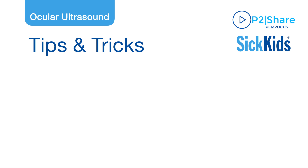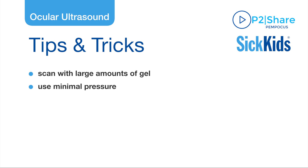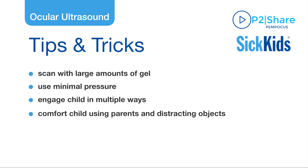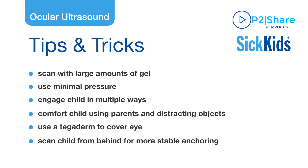Here are some tips and tricks to help you optimize your pediatric ocular scan. To minimize discomfort and injury, scan with a large amount of gel and use minimal pressure upon the globe. Engage the child with multiple methods to decrease anxiety, including showing them the machine and gel prior to touching them with the probe. Use methods of comfort such as parental involvement and distracting objects like TV or toys. Consider using a tegaderm to cover the eye. For positioning, consider scanning the child from behind using the forehead as an anchoring point. We hope you've picked up a few skills that will aid in your scanning approach. Happy scanning!